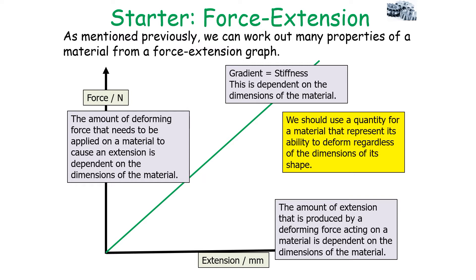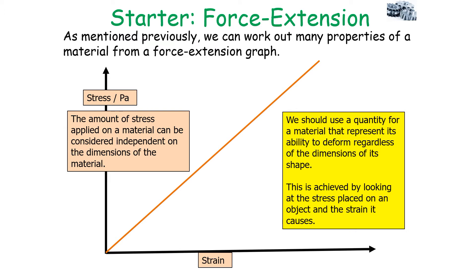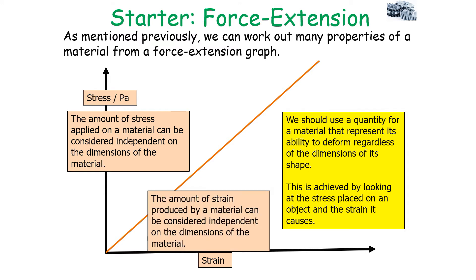In material physics, we need a quantity that can represent the ability for a material to deform regardless of the dimensions of its shape — an absolute quantity. This can be achieved not by using a force-extension graph, but rather by doing a stress-strain graph, looking at the stress placed on an object and the strain it causes, because both stress and strain can be considered independent of the dimensions of the material.